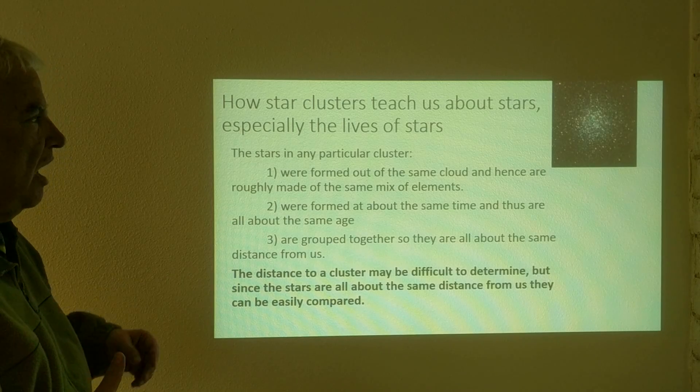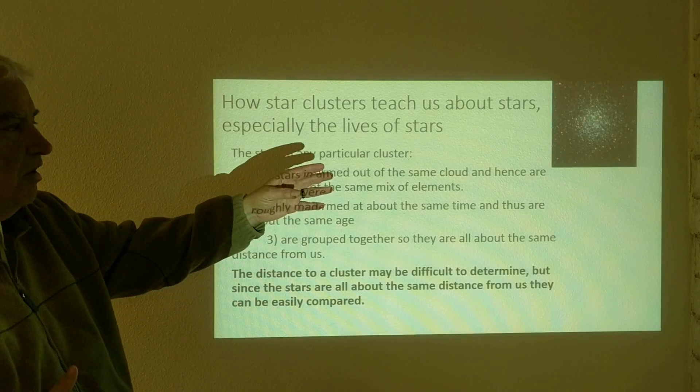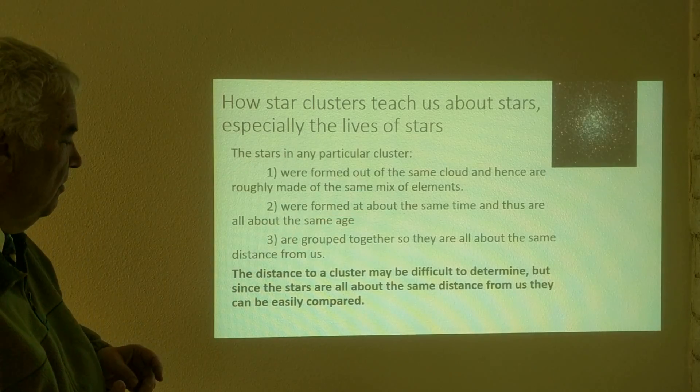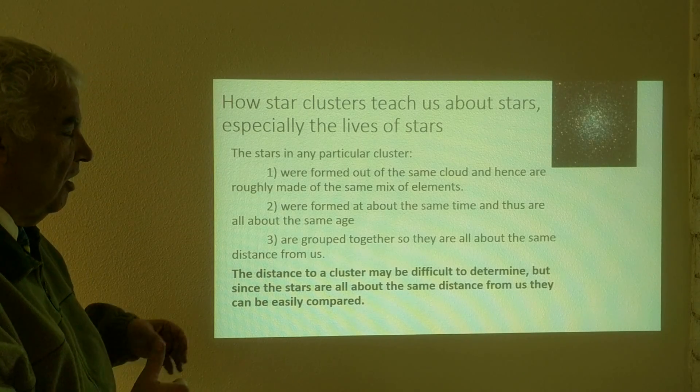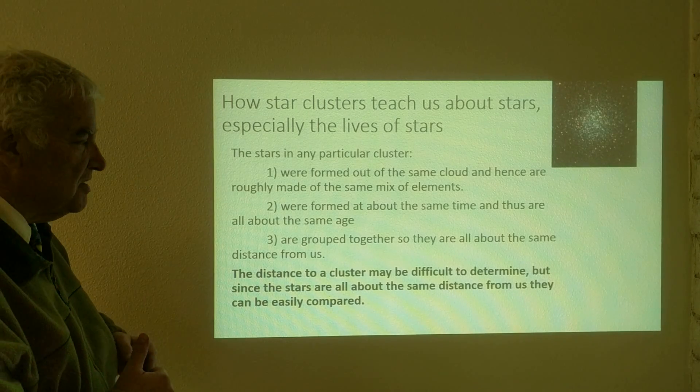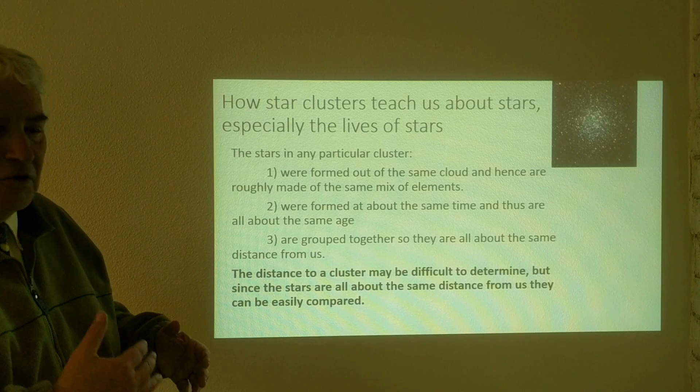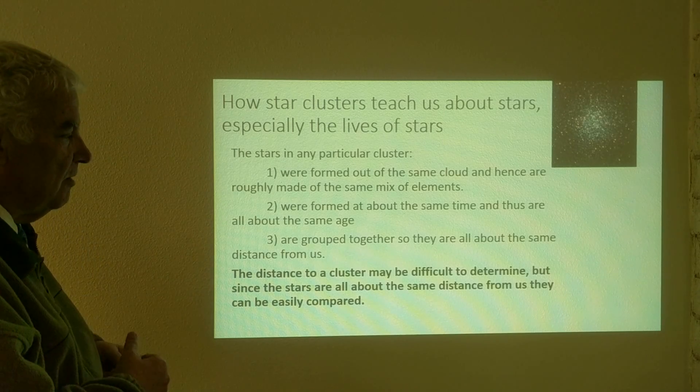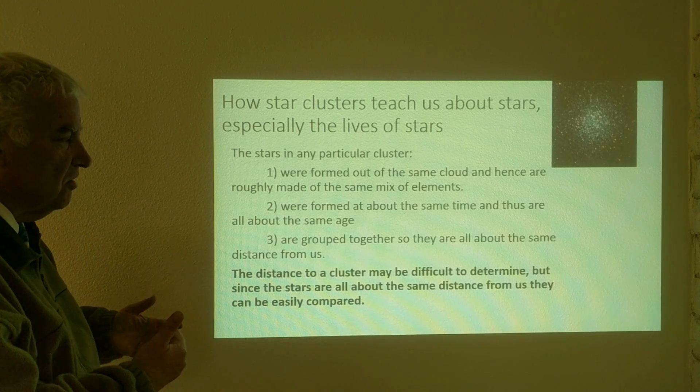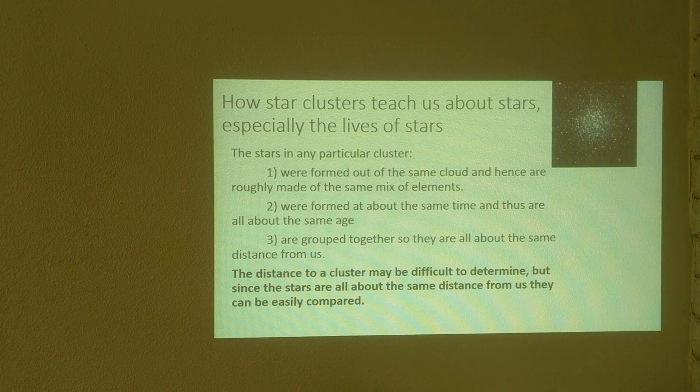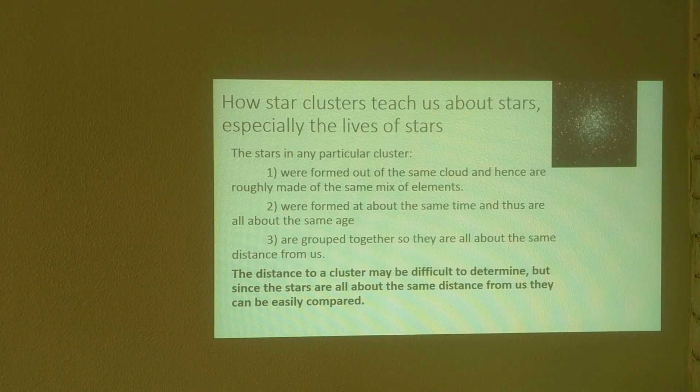The stars in a star cluster are too far away to be determined by parallax in most cases. However, since the stars are grouped together, they are roughly about the same distance from us. And so if we assume that they are all the same distance from us, we can still compare them directly without knowing the actual distance.